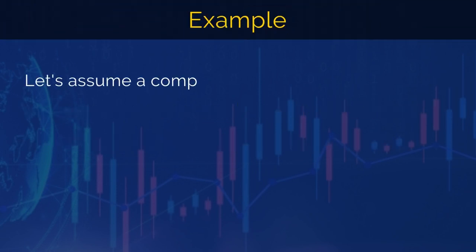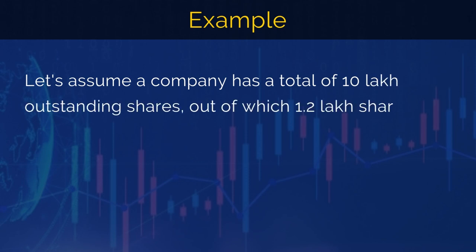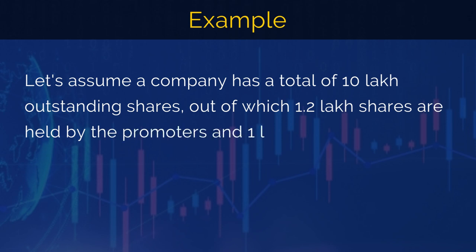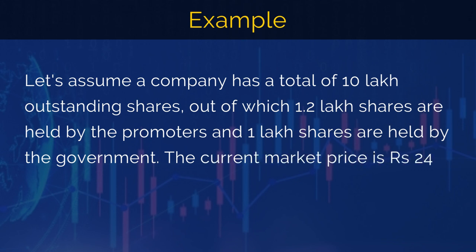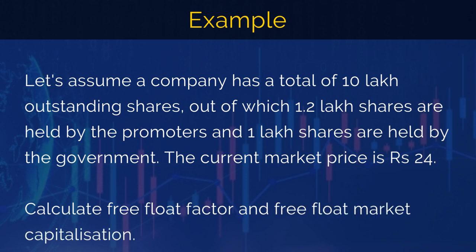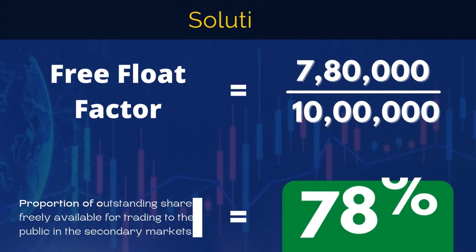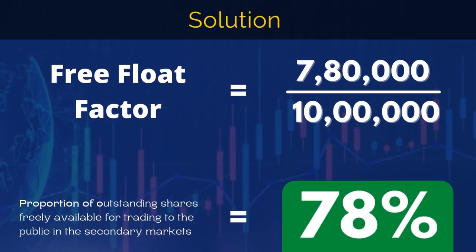Now let's understand these concepts with the help of an example. Let's assume a company has a total of 10 lakh outstanding shares, out of which 1.2 lakh shares are held by the promoters and 1 lakh shares are held by the government. As you can see in the table, the shareholding of promoters is 12%, while that of the government is 10%, implying the remaining shares are held by the general public. Hence, free float factor is equal to the number of shares held by the public divided by the total outstanding shares of the company, which in our case is 7.8 lakh divided by 10 lakh.